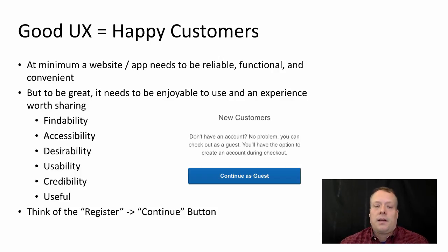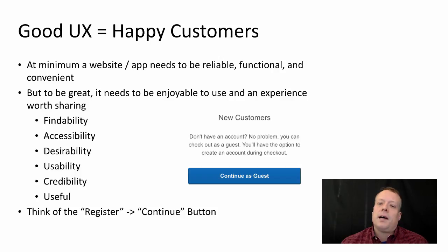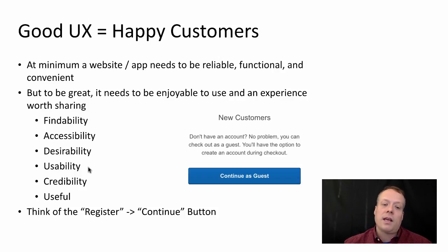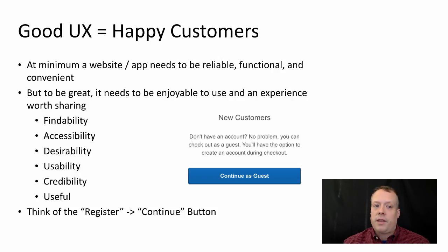One classic example of good UX design is the register versus continue button. We think it's from a Best Buy example. When they changed the button that used to say 'register' — when you were trying to make a purchase — to 'continue,' there was a huge difference in the amount of purchases made because people found it a much more enjoyable experience. It highlighted usability and desirability over trying to keep track of data, which was the reason the register button had been there before.